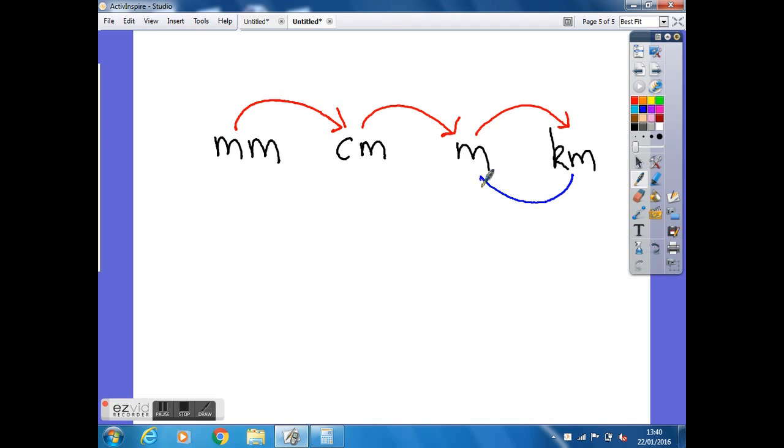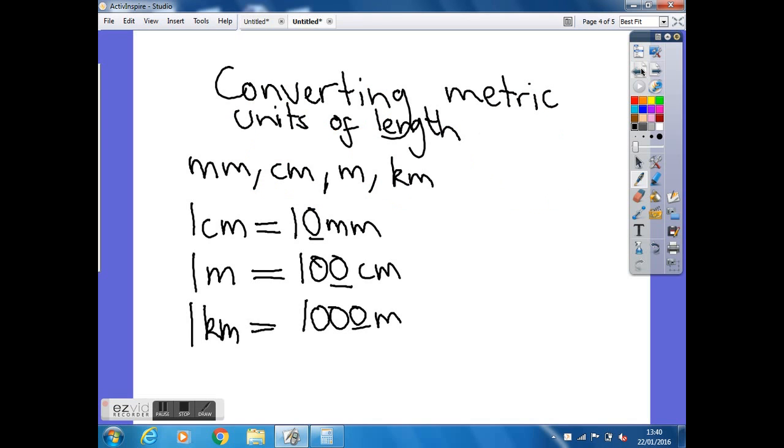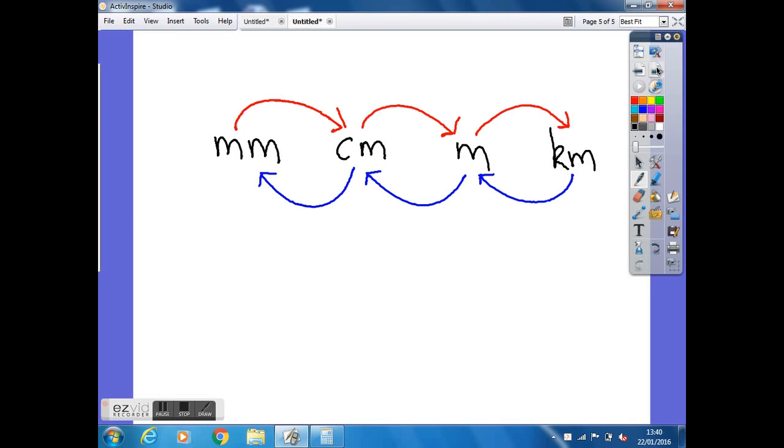We need to do the opposite going the other way on the bottom. So kilometers to meters, meters to centimeters, and centimeters to millimeters. What we're going to do next is actually add the numbers on. We know that ten millimeters make up one centimeter, a hundred centimeters make up one meter, and a thousand meters make up a kilometer. And then we're going to mirror that on the bottom with the same numbers.